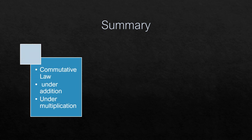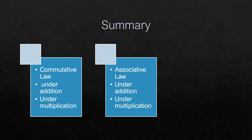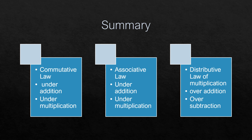Summary of this lecture: we discussed three things. Number one is commutative law, under addition and under multiplication — in commutative law we used only two whole numbers. Number two is associative law — in associative law we used three whole numbers, first under addition then under multiplication. Number three is distributive law of multiplication, first over addition and second over subtraction.